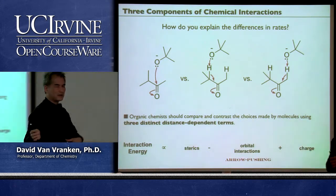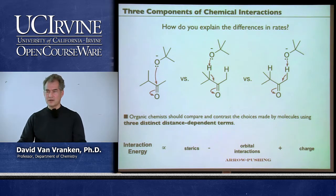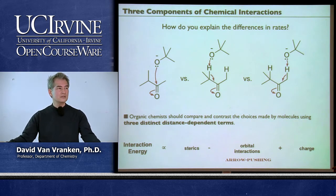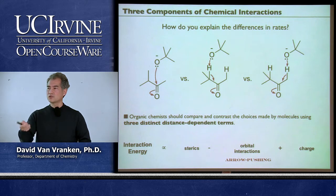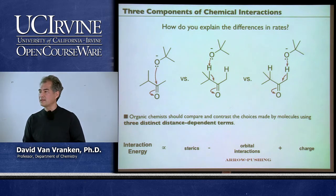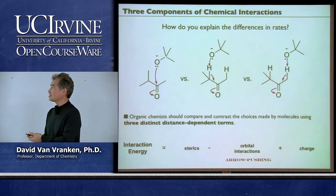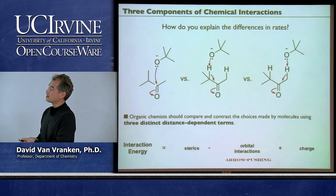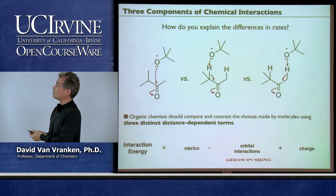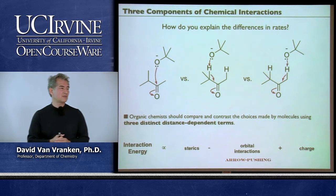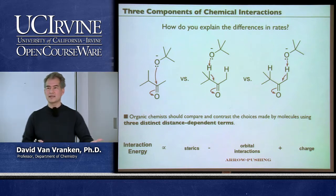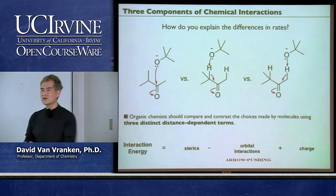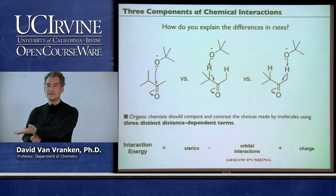Consider a common situation: you have two reactants, multiple different pathways, and you're trying to decide which pathway is most likely. If I take a t-butoxide anion and some sort of a ketone, there are choices—you can attack the carbonyl or you can deprotonate. And there are two different sides you can deprotonate if it's not a symmetrical ketone, which is virtually always the case. How do you decide which pathway is more likely?